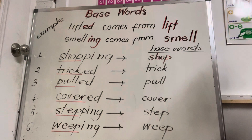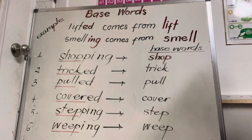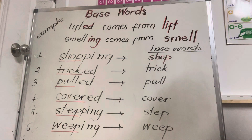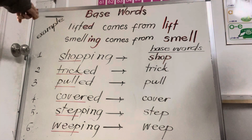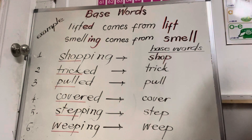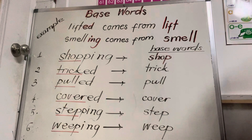What is a base word? Lots of words are made from base words. We can add 'ed' or 'ing' to a base word to make bigger words. For example, the word 'lifted' comes from the word 'lift,' and 'smelling' comes from the word 'smell.' So now you know what a base word is — it's the original word, right?